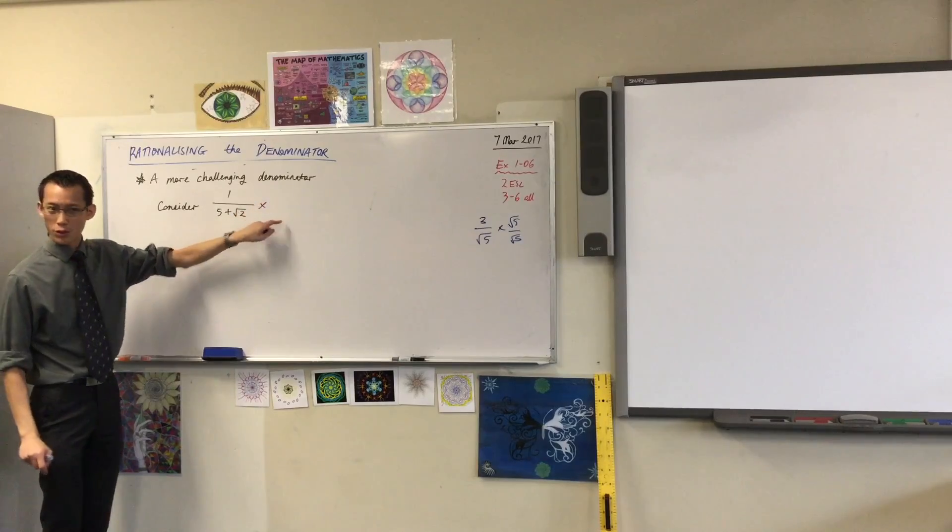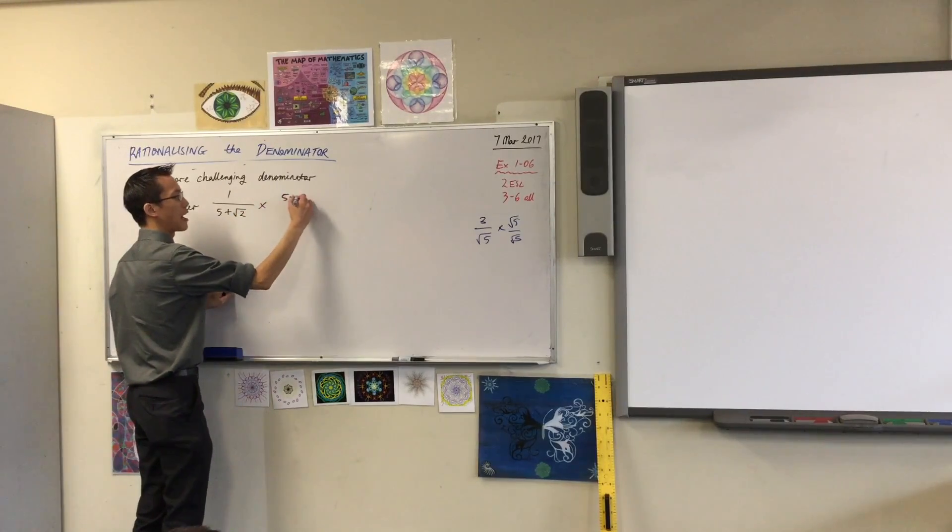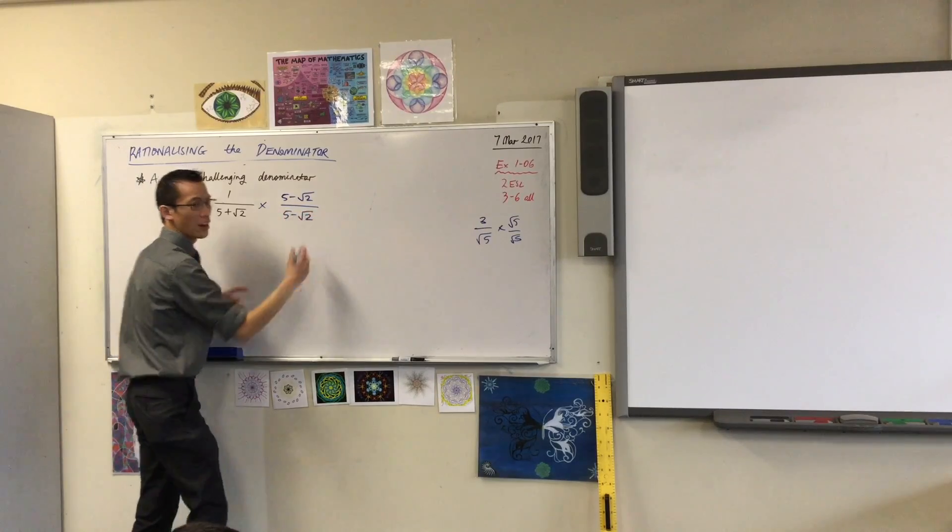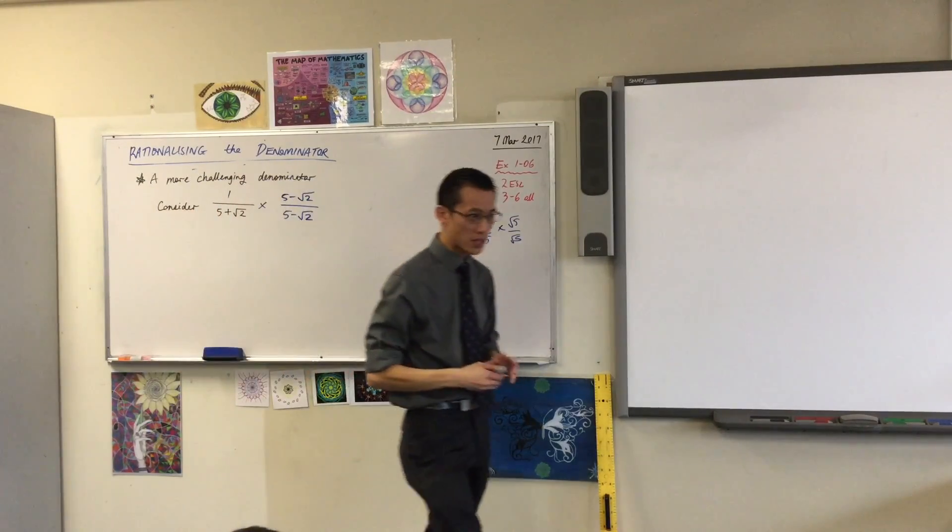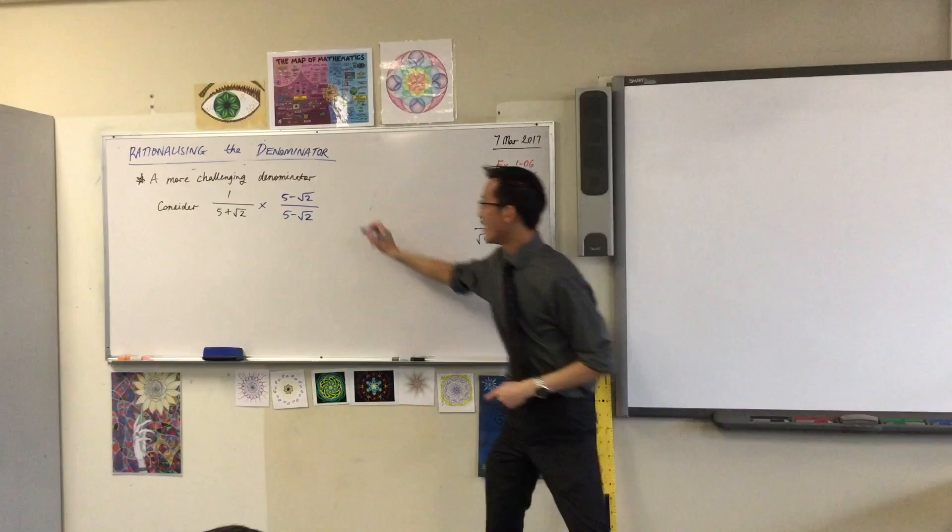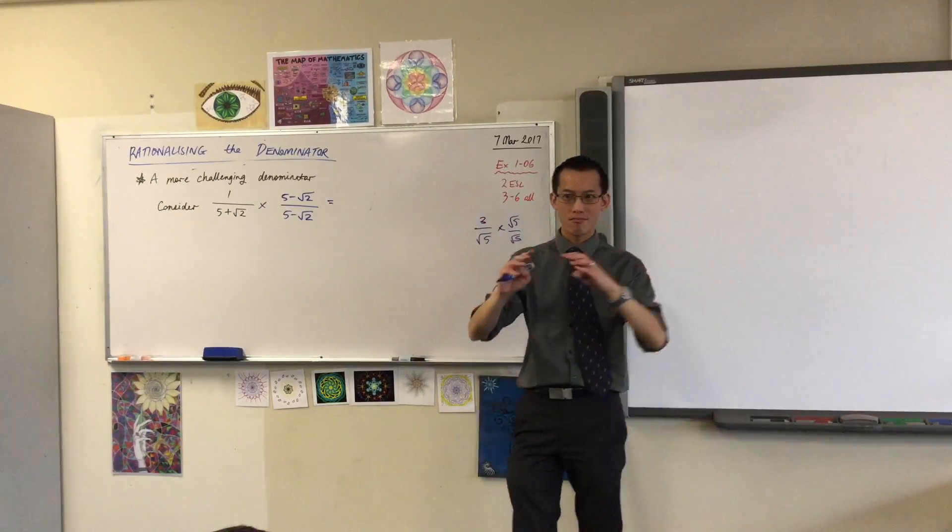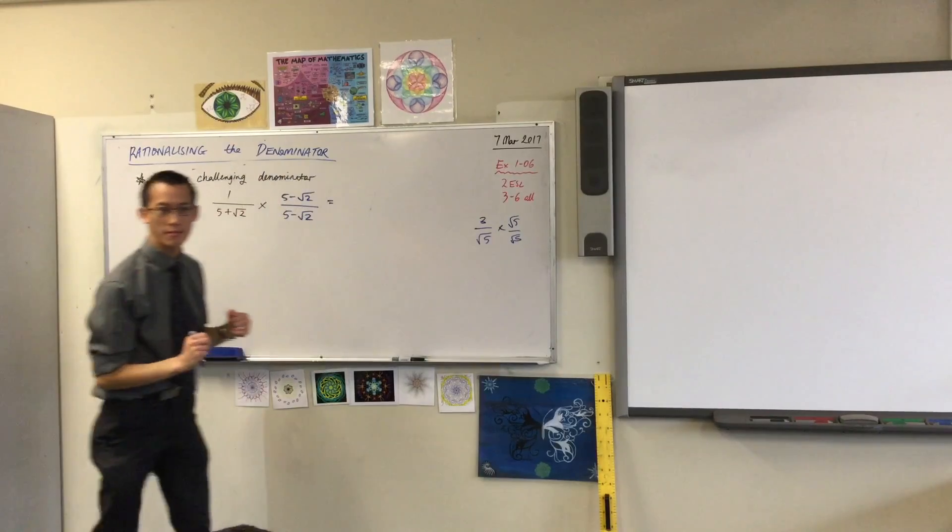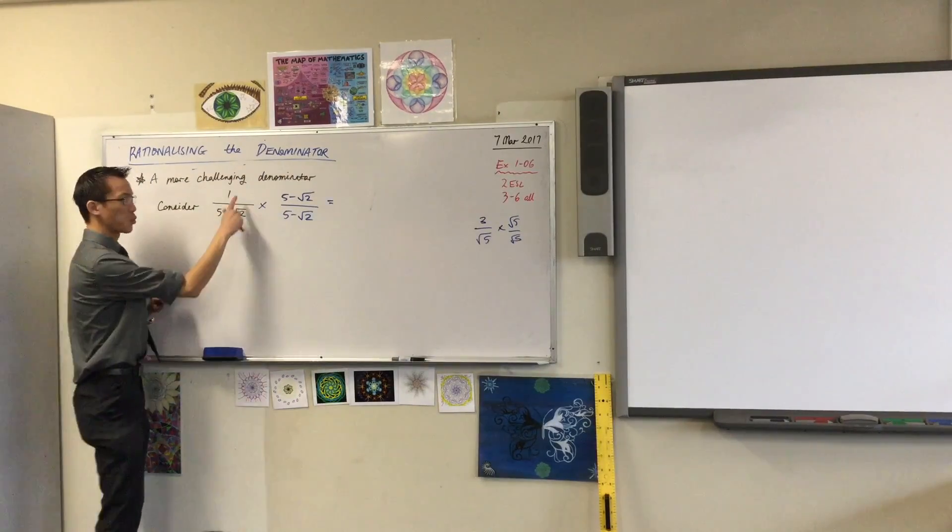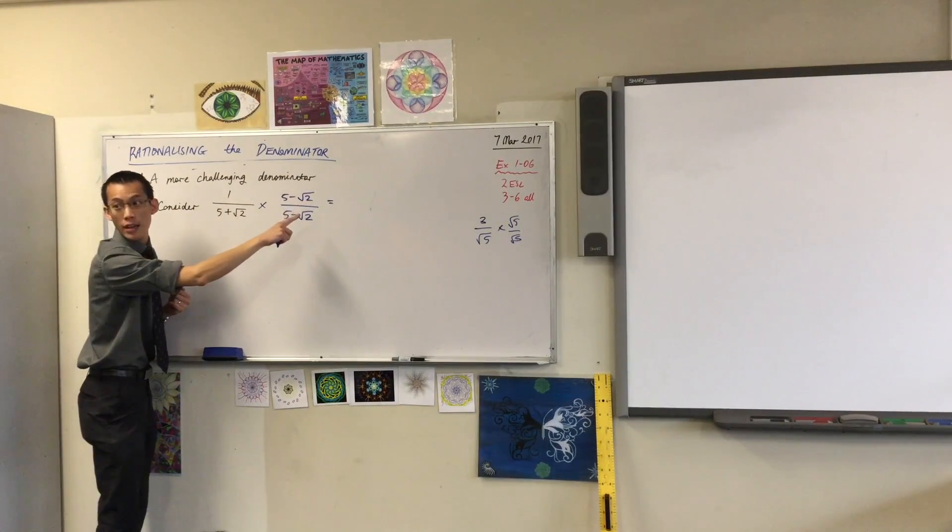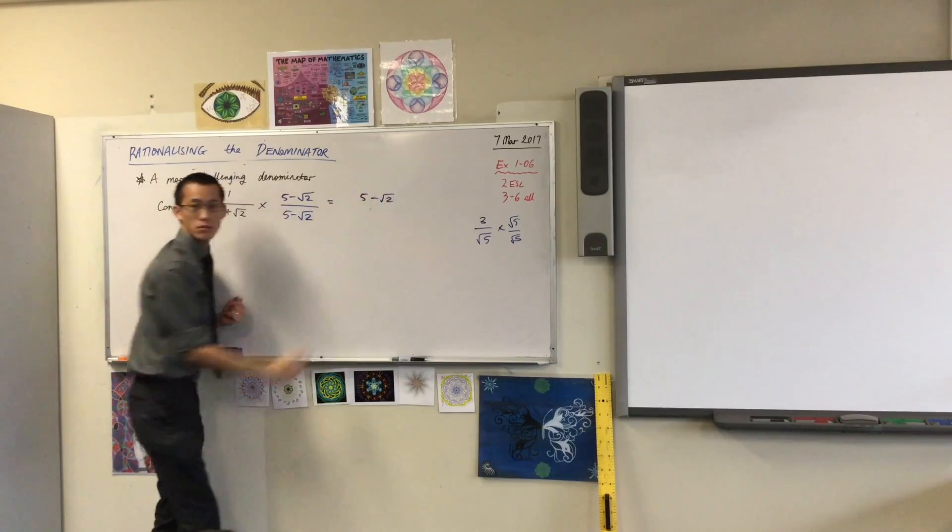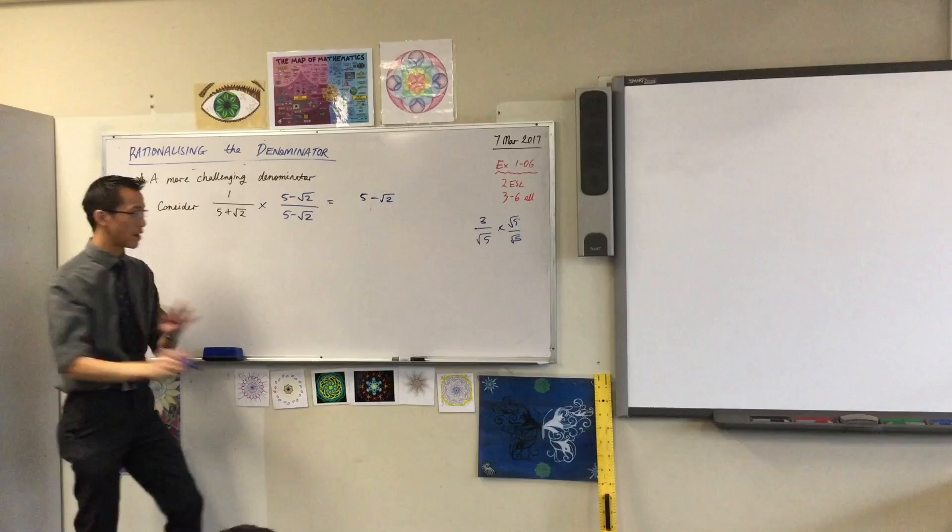Instead of multiplying root 2 on root 2, I'm going to multiply by this. Now I know that looks like a bit of a mouthful. That's okay. Stay with me. One step at a time. Humor me, what does the numerator become? It's just one of these, right? So one of these is just 5 minus root 2. Is that okay? Alright, so far so good.